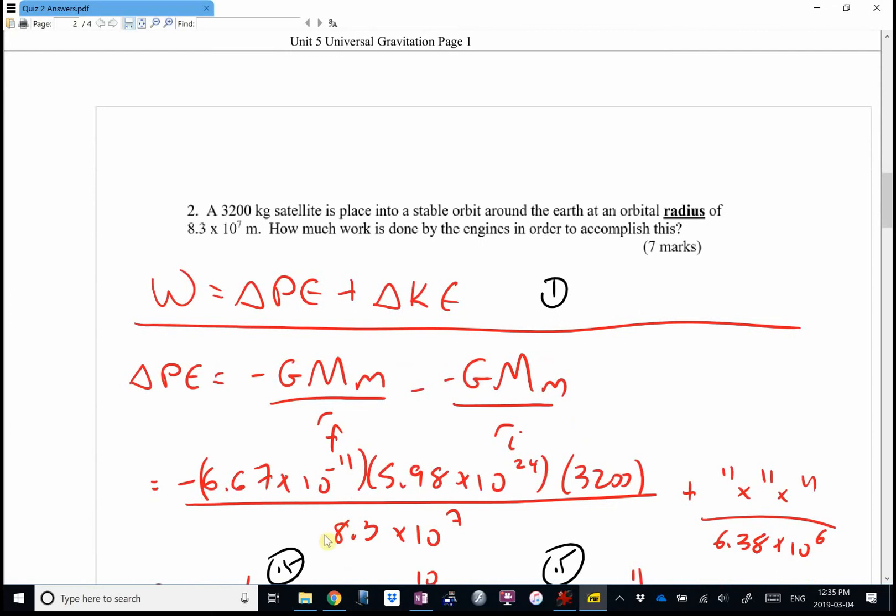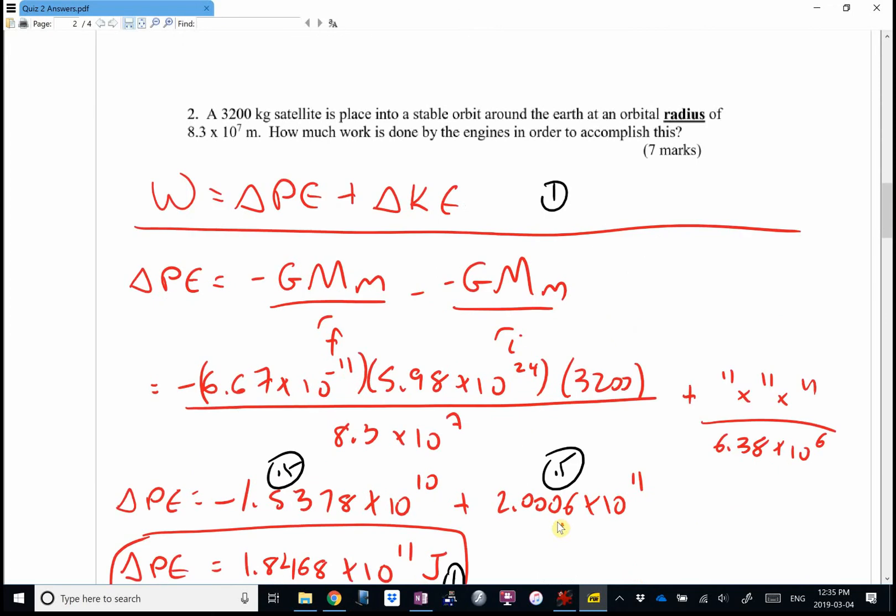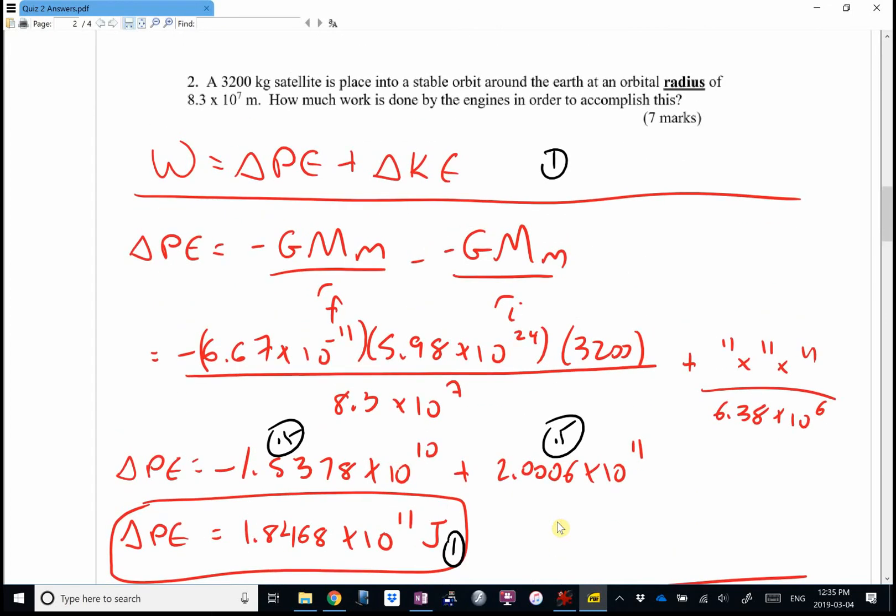I used mass of the earth and radius of the earth. They did give me a radius, that 8.3 × 10^7 that you can hardly read because I was writing in a hurry, is a radius. So I don't need to add the radius of the earth to that one. It did say it's measured from the center. And I got a change in potential energy of 1.847 × 10^11 joules.